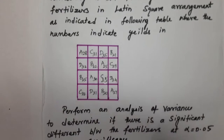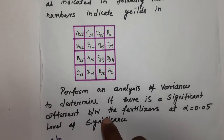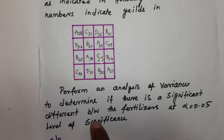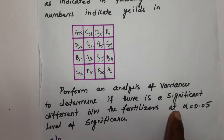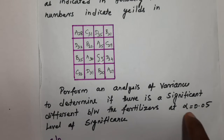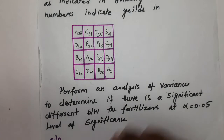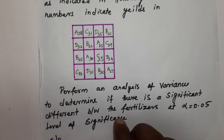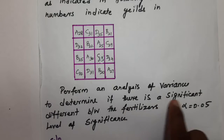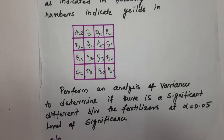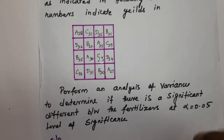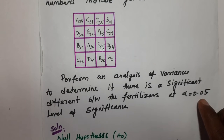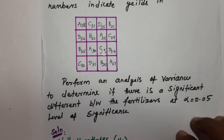Perform an analysis of variance to determine if there is a significant difference between the fertilizers at the alpha equals 0.05 level of significance. We need to determine whether there is a significant difference between the different fertilizers.